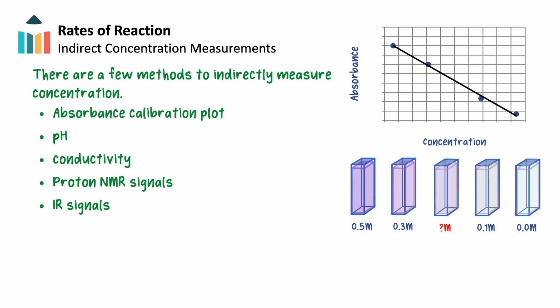There are a few methods to indirectly measure the changes in concentration. If, for example, we are monitoring parameters such as absorbance, we will need to perform a calibration experiment.